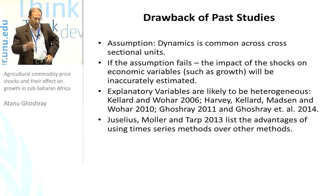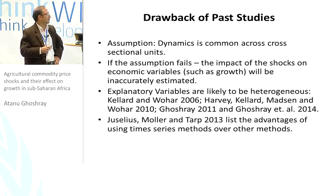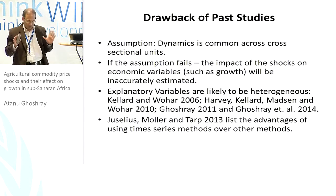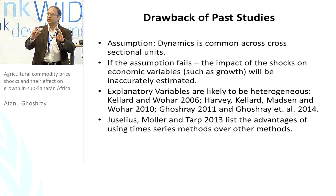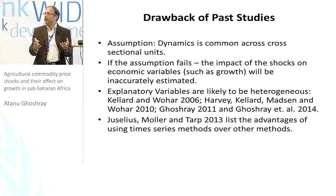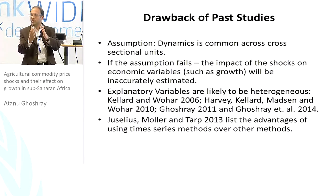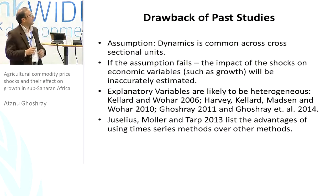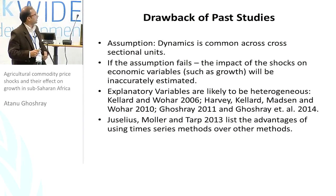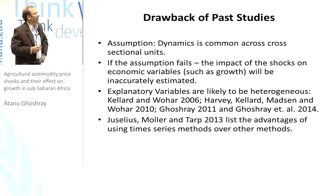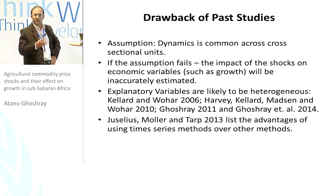Another issue is that the explanatory variable used in past studies is a single commodity index — the Deaton and Miller index. But current literature shows that commodities behave quite differently; even within categories such as beverages, coffee, cocoa, and tea behave differently, and metals like zinc, copper, and lead have different dynamics. To aggregate them into one commodity index seems a fairly restrictive assumption. A recent paper by Euselius, Moller, and Tarp in the Oxford Bulletin of Economics and Statistics has lucidly listed the advantages of using time series methods over panel and cross-section approaches.